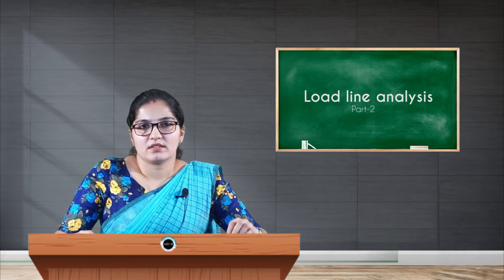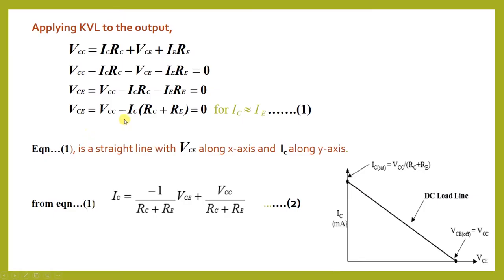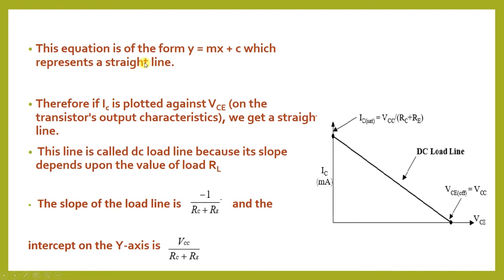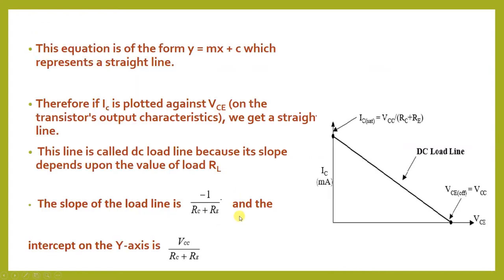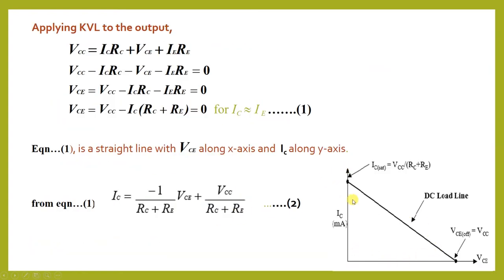The equation represents a straight line: IC is equal to a term multiplied by VCE, resembling the standard form Y = MX + C, with slope M equal to minus 1 by (RC + RE) and intercept C equal to VCC by (RC + RE). This load line equation can be drawn on the output characteristic curve of a transistor.